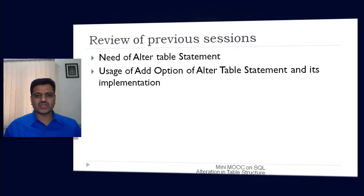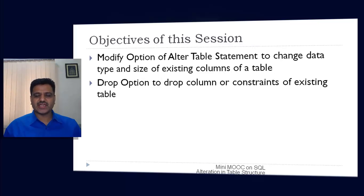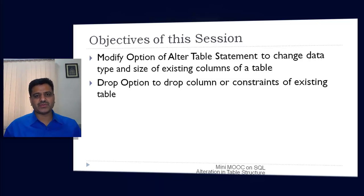In the previous session we discussed the add option of alter table statement to add columns or constraints to an existing table, and demonstrated its usage in SQL. In this session we will discuss the modify option of alter table statement to change the data type or size of existing columns, as well as the drop option to drop existing columns or constraints from the table.